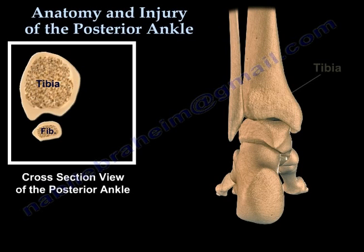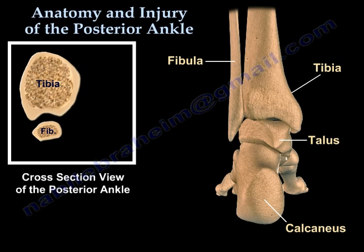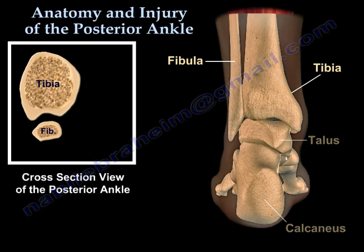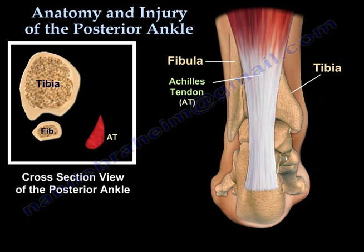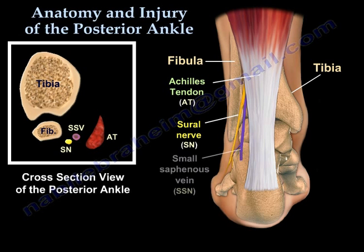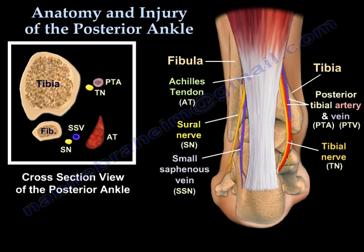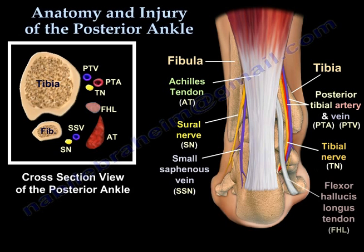Here you can see the tibia, the fibula, the talus, and the calcaneus. Also visible are the Achilles tendon, the sural nerve, the small saphenous vein, the tibial nerve, and the posterior tibial artery and vein, followed by the flexor hallucis longus tendon and the retrocalcaneal bursa.